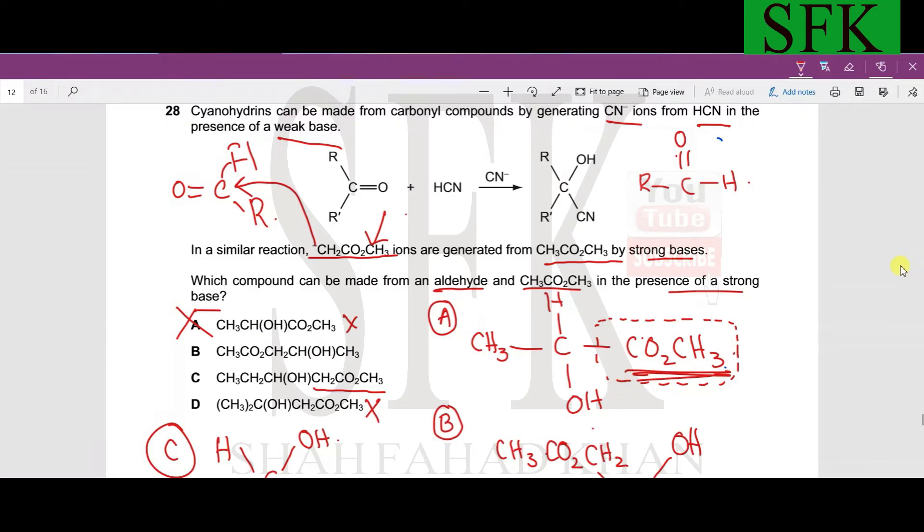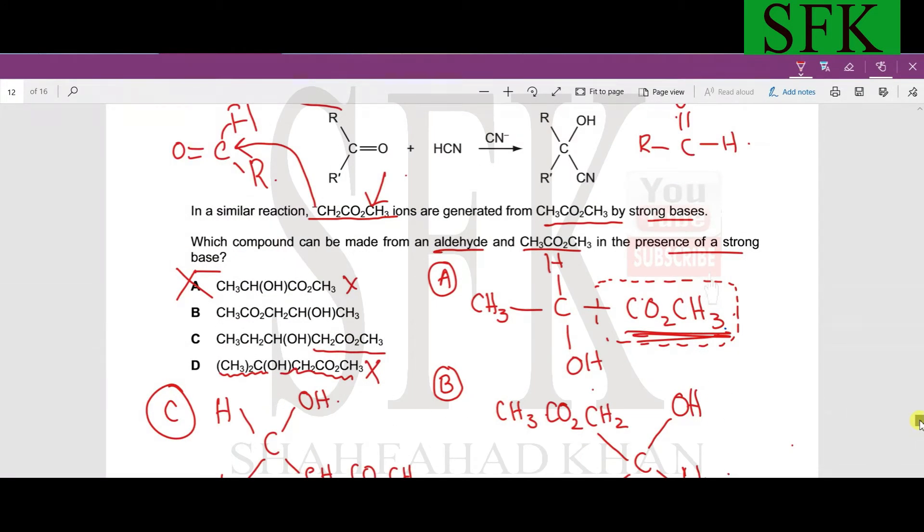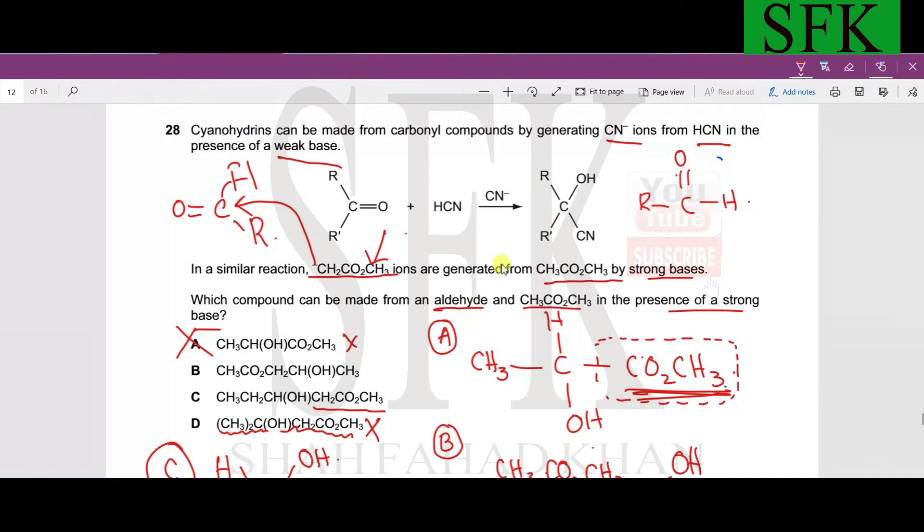What about option C and option D? If we look at option D, the same issue goes with it. If we open the structure up, we will have an OH group and two CH3 groups. Two CH3 groups would actually mean that this was an initiating ketone rather than aldehyde. This was not an aldehyde, so D cannot be the answer. If you trace this one back, it will form a ketone, not an aldehyde.